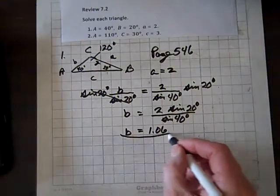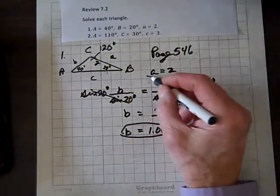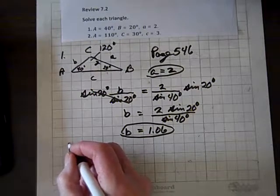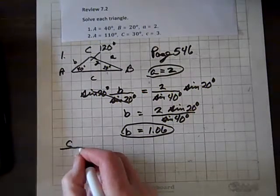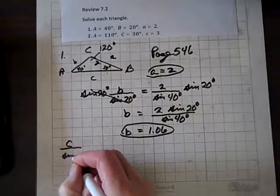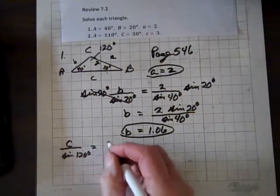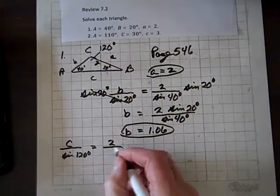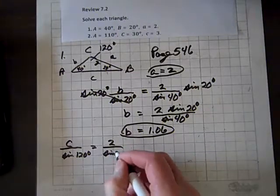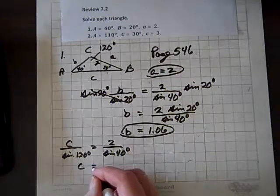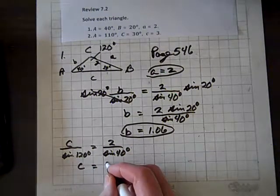Now let's do the same thing for C. C over sine of 120 degrees equals 2 over sine of 40 degrees.